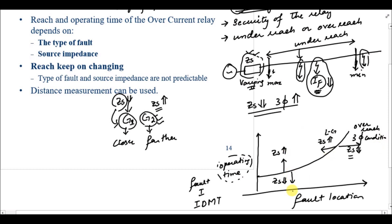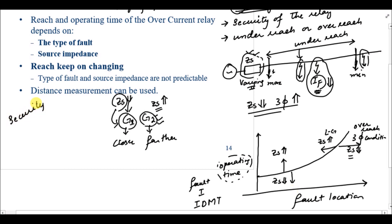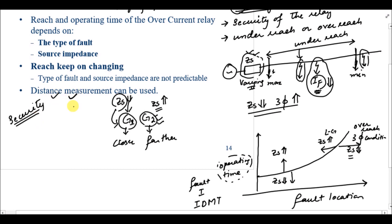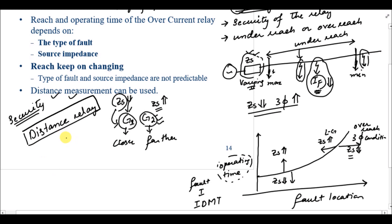That's why we can use the overcurrent relay with acceptable results in distribution feeders, but for transmission lines, security becomes the major issue. If there is a false tripping of a transmission line, the whole power system can become unstable. So for transmission lines, we use distance measurement — the distance relay — which we will discuss in the coming lectures.